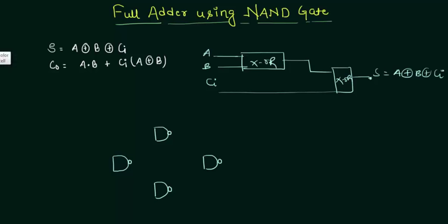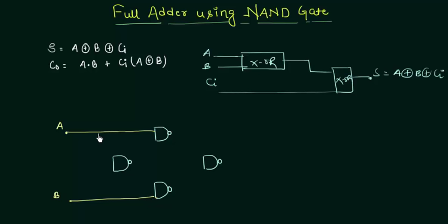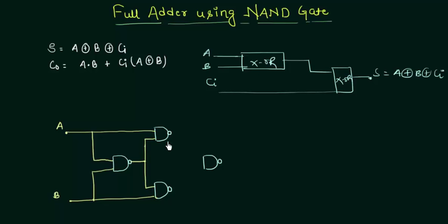Now watch carefully how we implement it. This is our first input A, this is our second input B. A will also go to this gate, and B will act as one of the inputs to this gate. The output of this gate will go as input to this one and also as one of the inputs to this one.